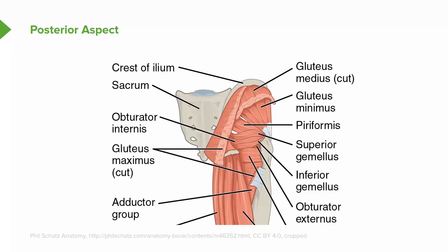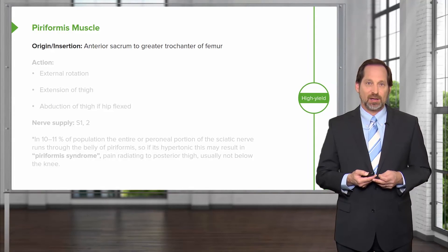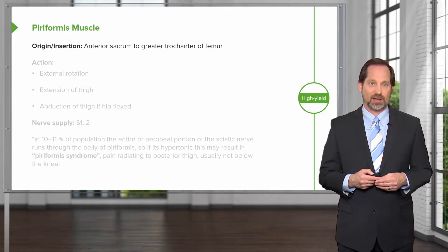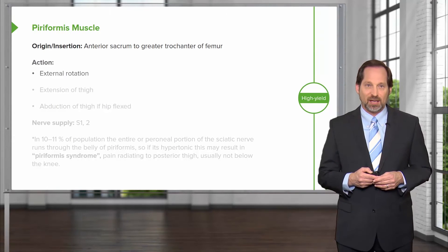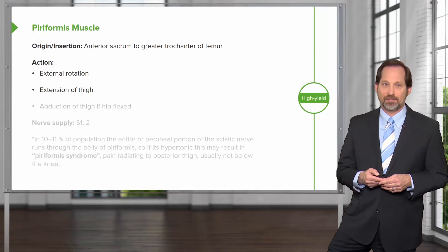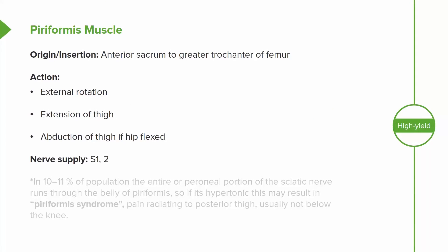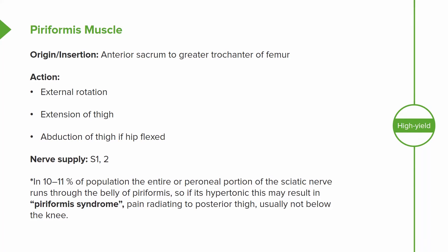Here is a photo of the gluteus medius, minimus, and piriformis and their attachments to the sacrum. Piriformis is one we focus on quite a bit because there's a lot of pain associated with it. The piriformis causes external rotation, extension, and abduction of the thigh. It's supplied by S1 and S2, and piriformis syndrome is something we assess for often.